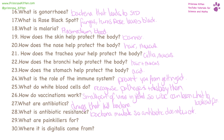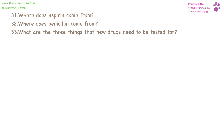Pain killers are used to stop pain. Digitalis comes from foxgloves. Aspirin comes from willow, specifically the bark. And penicillin comes from mould. Three things that drugs need to be tested for: side effects, dosage, and efficacy — which is how well it works.